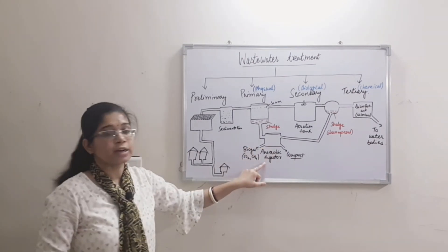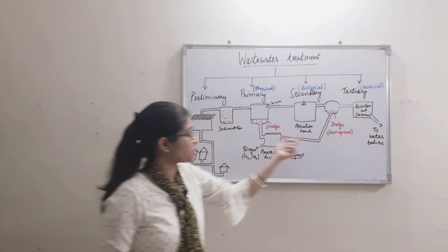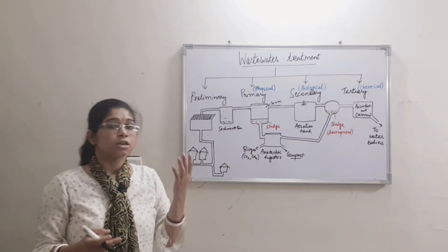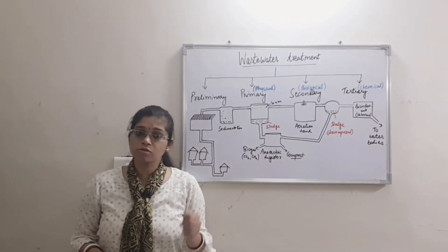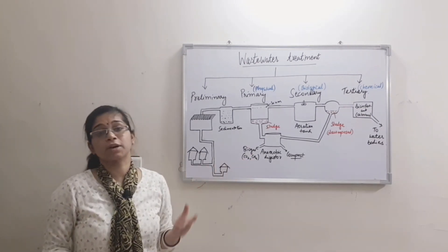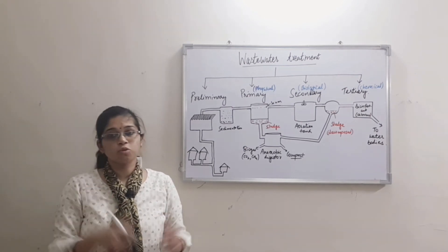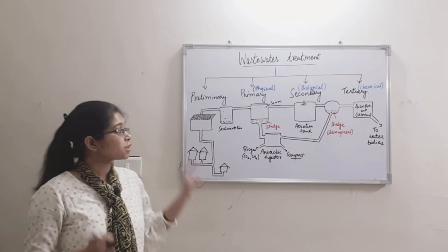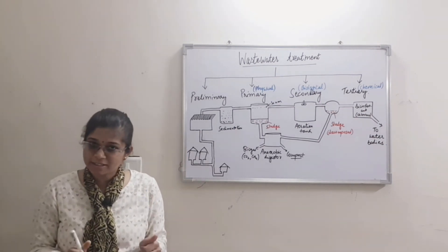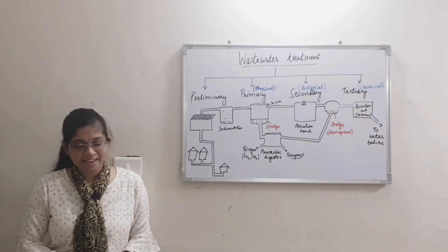The sludge chamber is called an anaerobic digester where oxygen is not present. The biogas produced is mainly CO2 and methane, which we can use as fuel. Please write in the comment section. Like and subscribe to our channel. See you in the next video. Bye bye and stay safe.